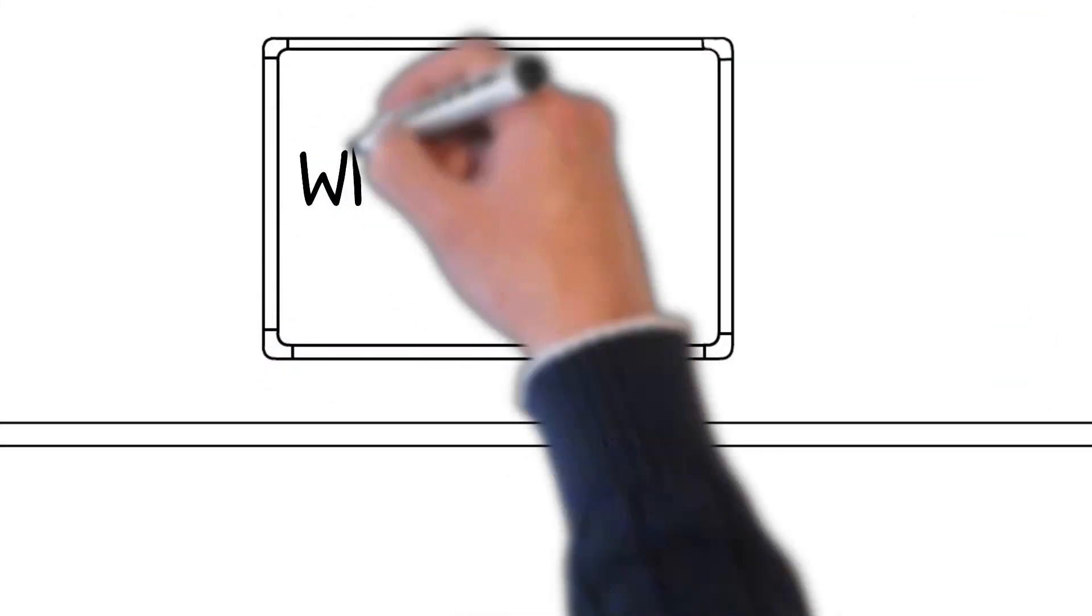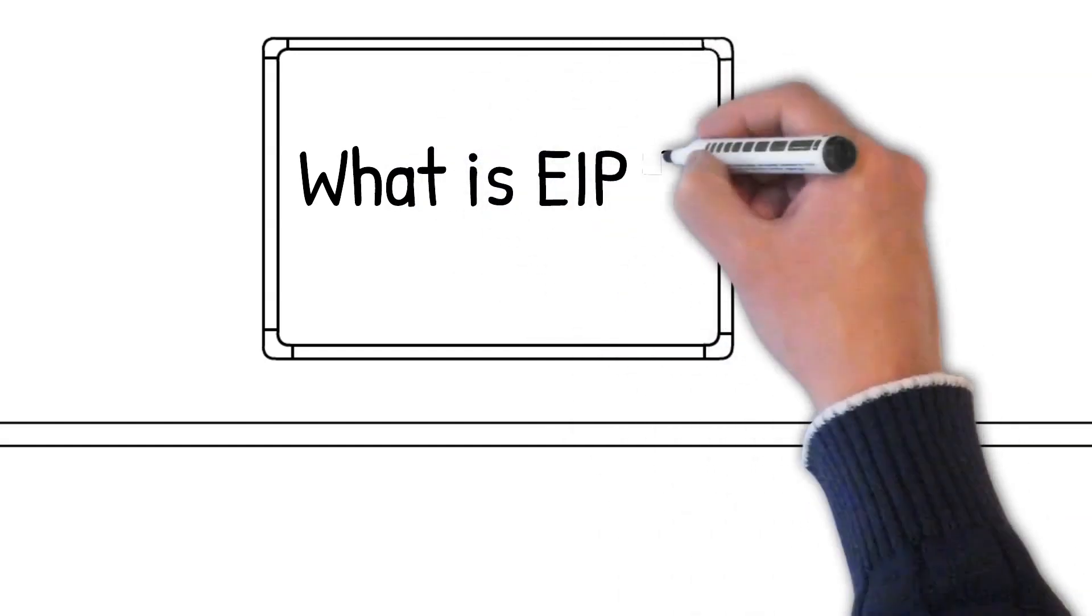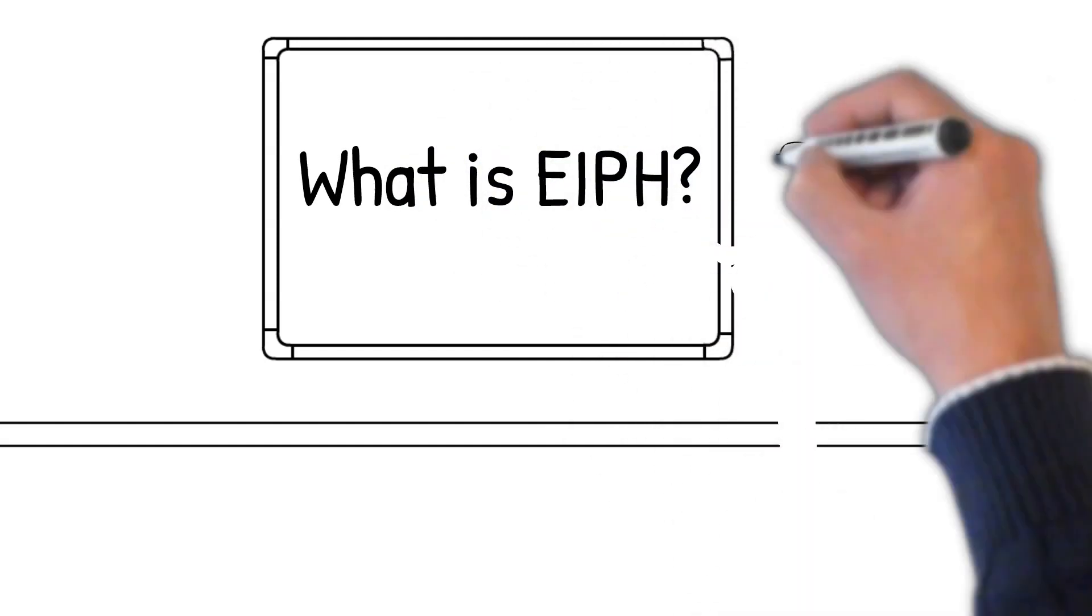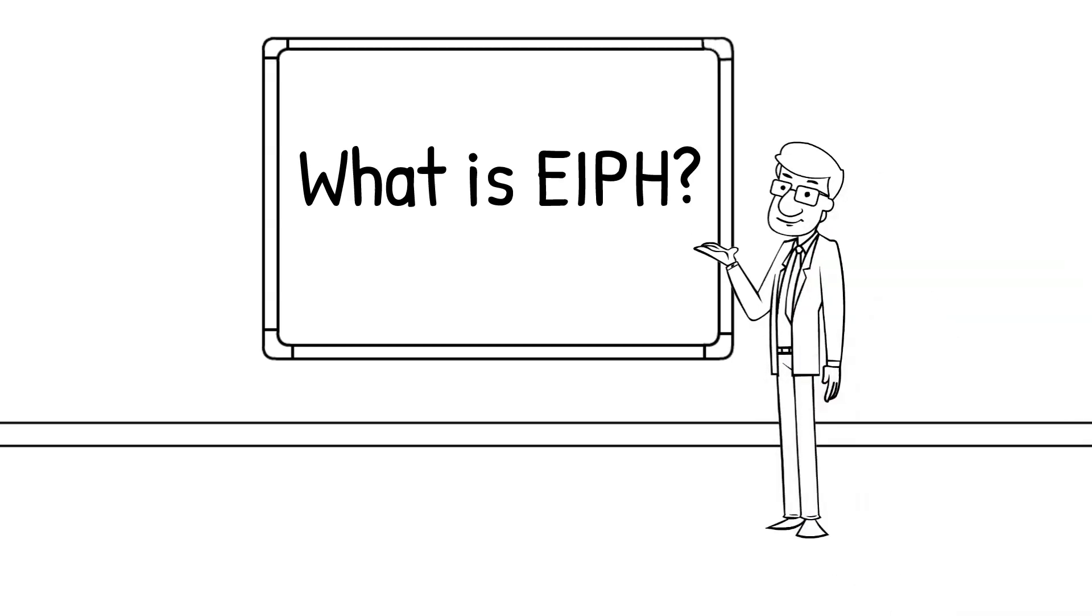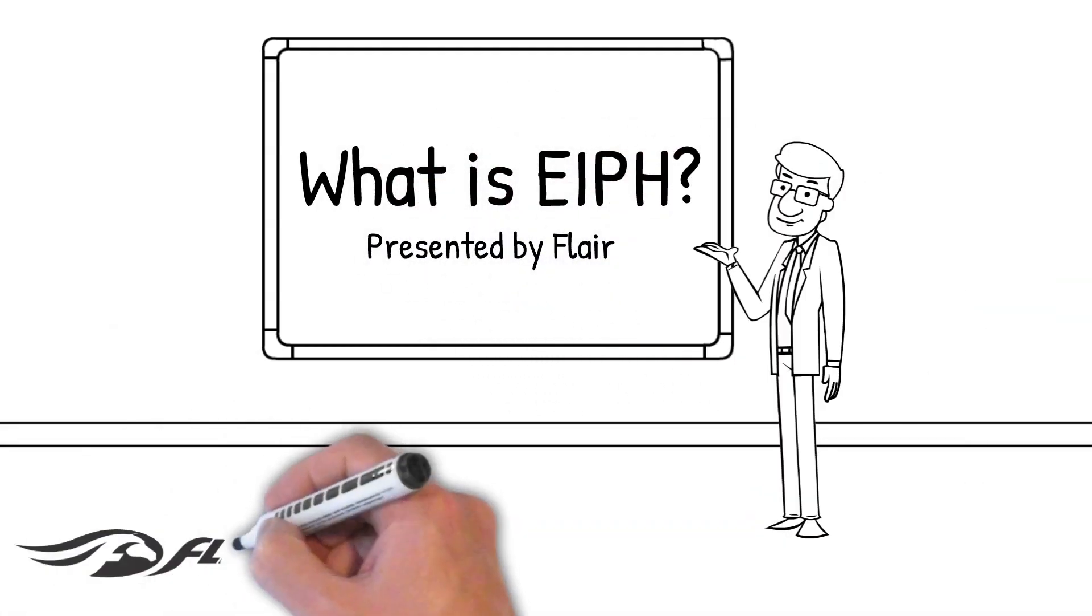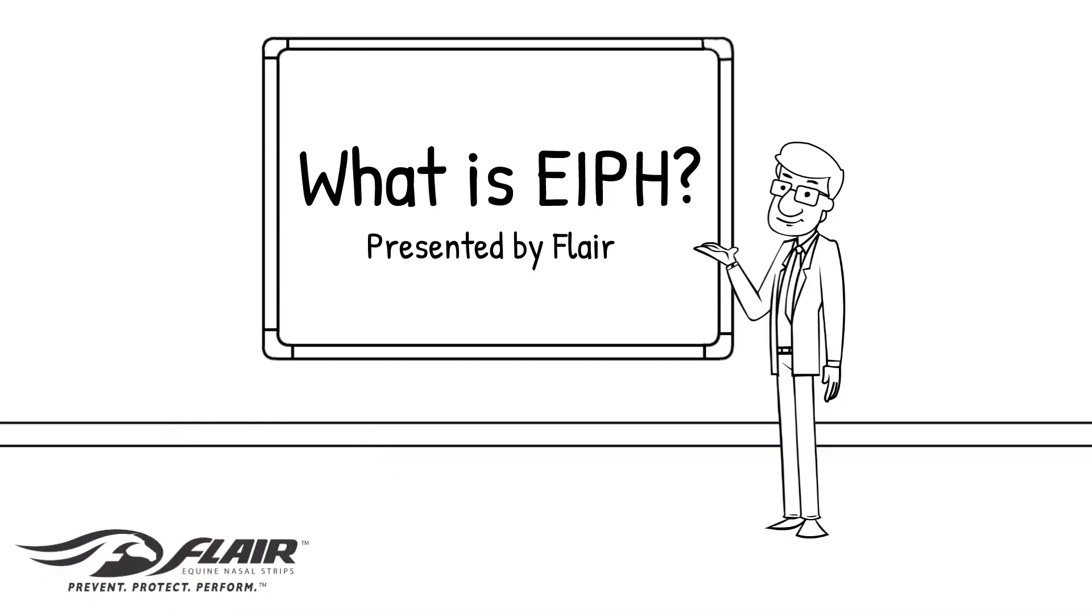Exercise-induced pulmonary hemorrhage, or EIPH, is a condition that can occur in all horses during intensive exercise. This video will discuss the major factors causing EIPH as currently understood.